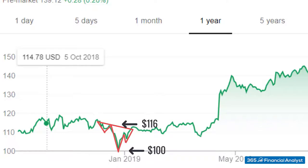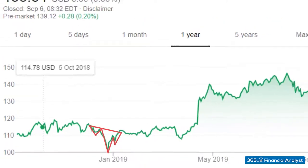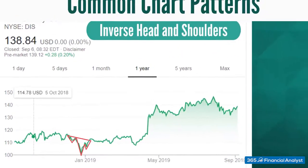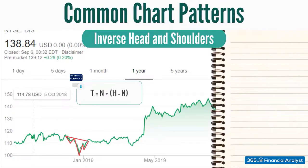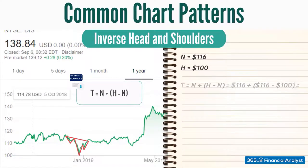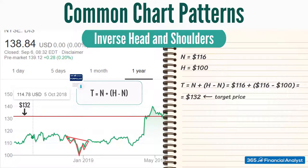We simply need to alter the formula we saw for a traditional head and shoulders. Here, the price target equals the neckline plus the difference between the neckline and the head. This gives us a price target of 132, calculated as 116 plus (116 minus 100). In this case, Disney's stock made an even more impressive rally.